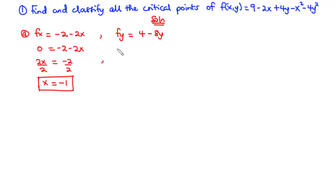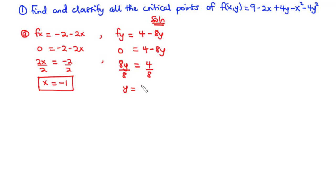Setting fy = 0 gives 4 − 8y = 0, so 8y = 4, meaning y = 1/2. Therefore, the critical point is (−1, 1/2).